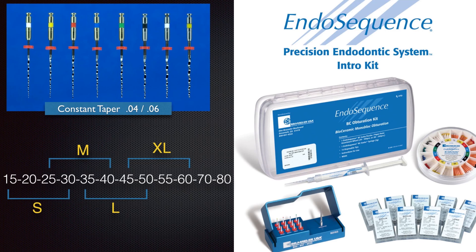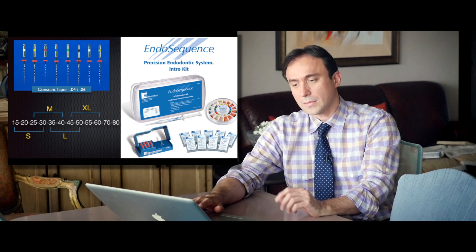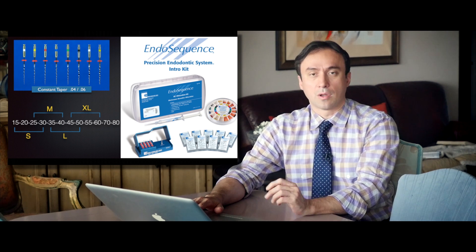We decided to take this filing system and figure out first how it was originally designed, then see how we could improve on it. The Endo Sequence filing system is highly versatile — file sizes from 15 to 50 in the 06 taper, 15 through 80 in the 04 taper, and with the RACE files, sizes 15 through 80 in the 02 taper, covering any canal shape and size. Doctors Koch and Brave simplified the system by creating procedural packages — small, medium, large, and later extra large — each containing four files per package, from which you would derive a master file used to instrument and obturate the case.